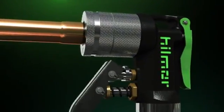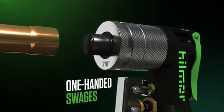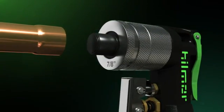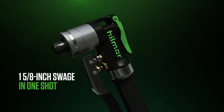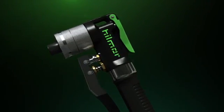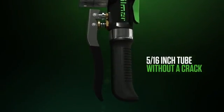A smooth lever mechanism and release button help to create perfect one-handed swages with no sweat or strain. These lightweights have the power to knock out a 1 and 5 eighths inch swage in one shot as well as the precision to swage a 5 sixteenths inch tube without a crack.